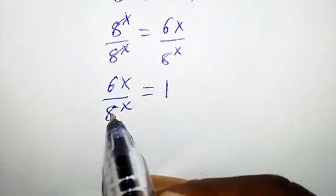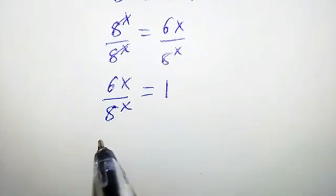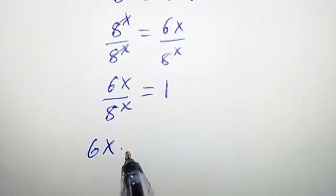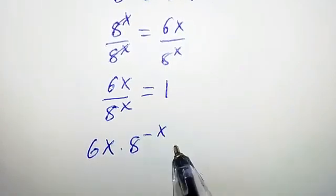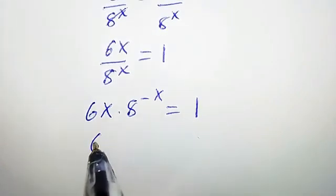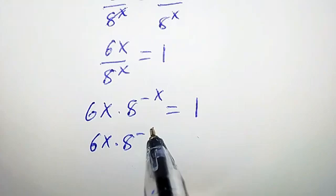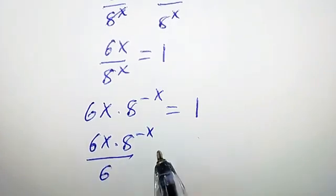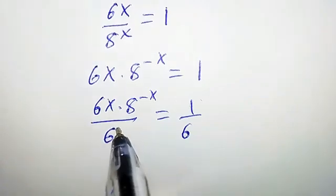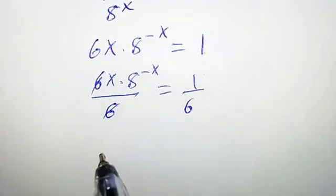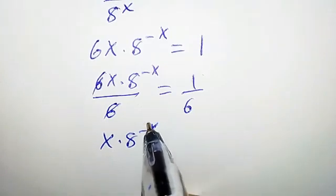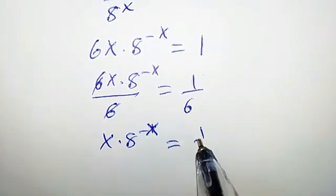Now, suppose we want 8 to the power of x to be at the numerator, so it will become 6x times 8 to the power of negative x equal to 1. Let's divide both sides by 6. So we are going to have 6x times 8 to the power of negative x over 6 equal to 1 over 6. Clearly, 6 cancels 6, so we are left with x times 8 to the power of negative x equal to 1 over 6.